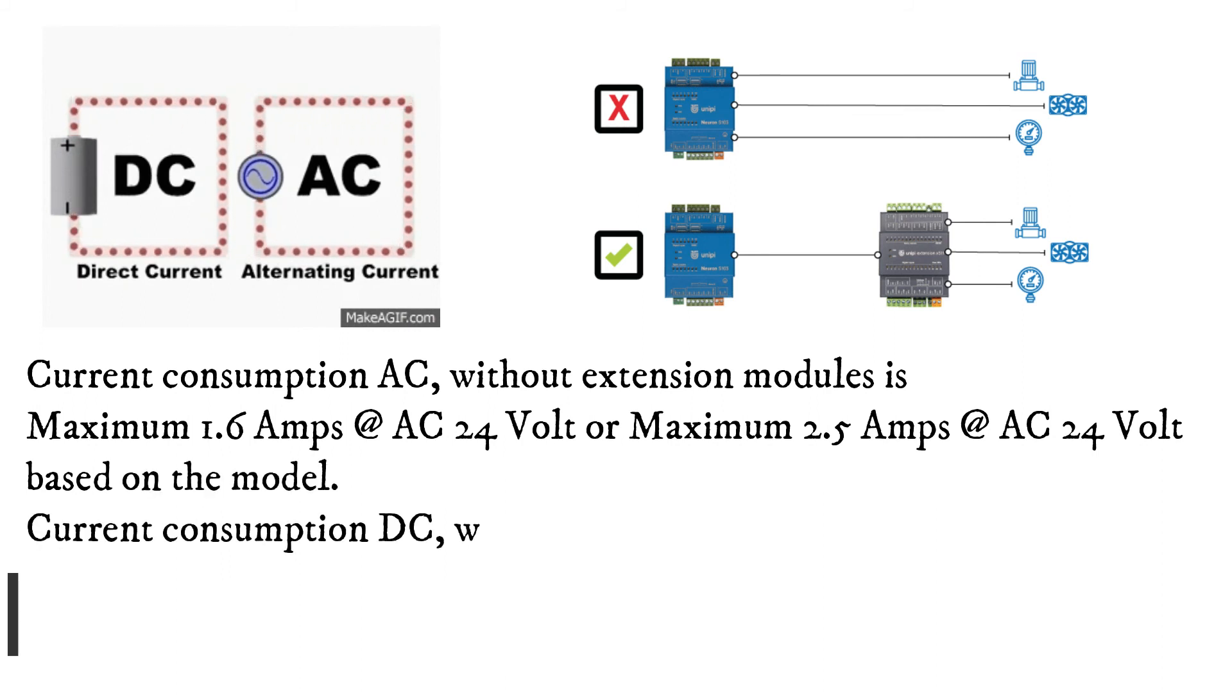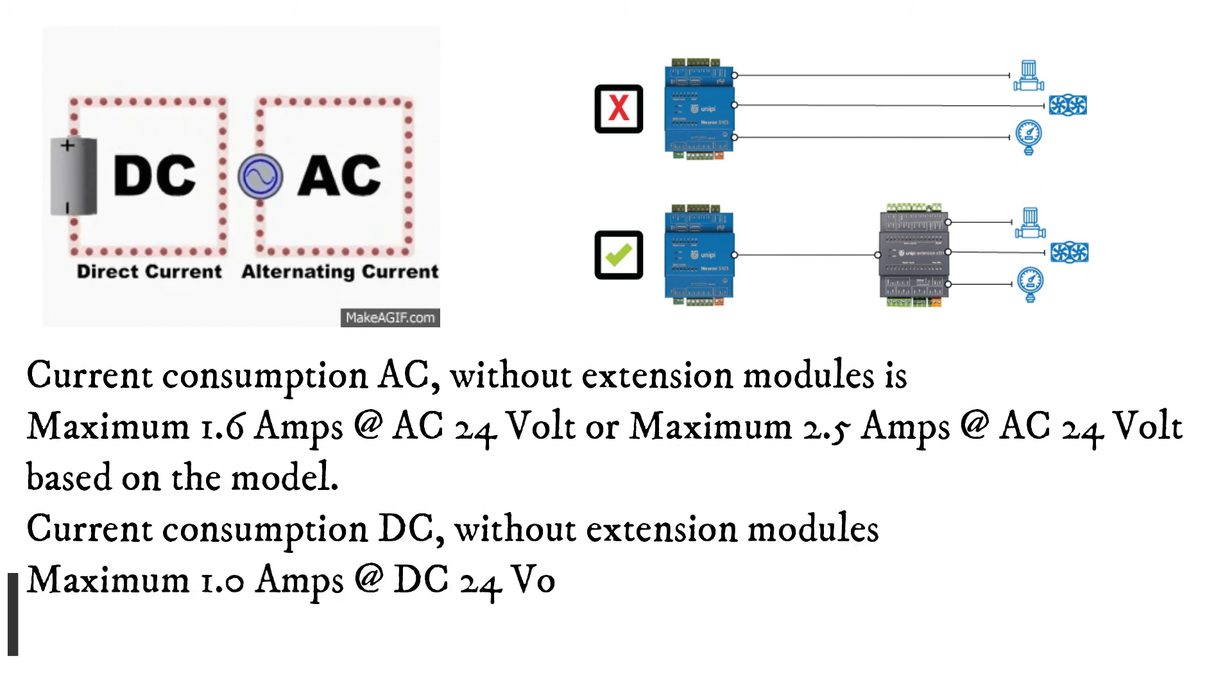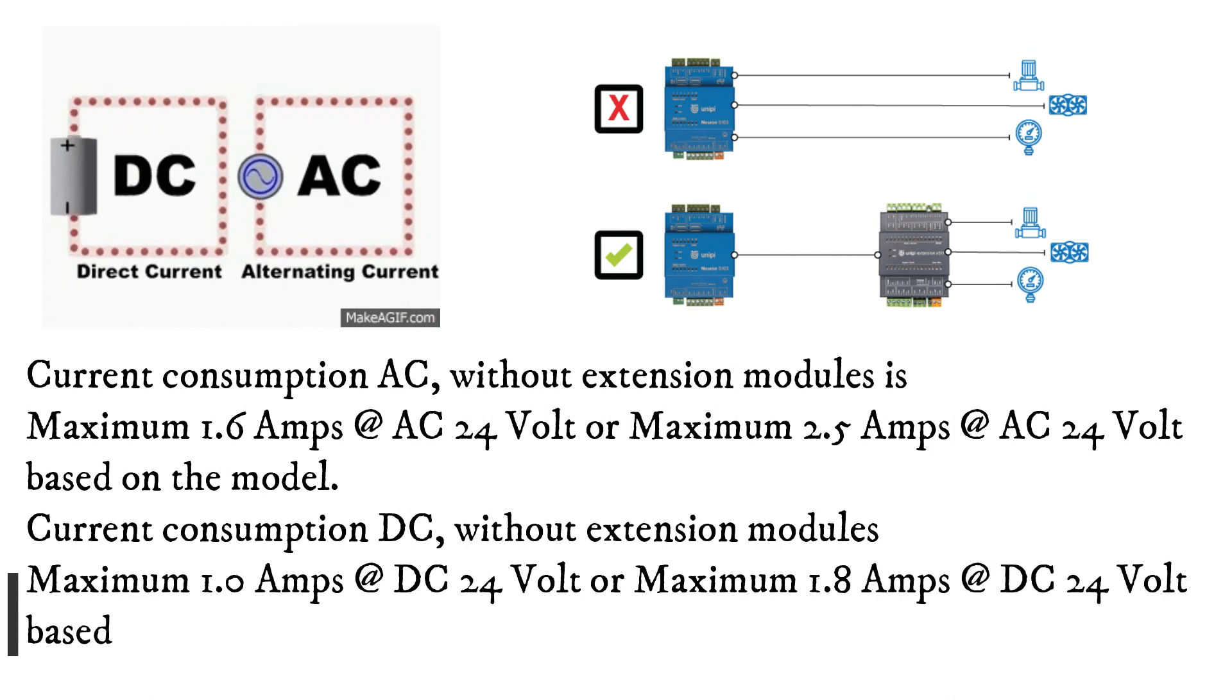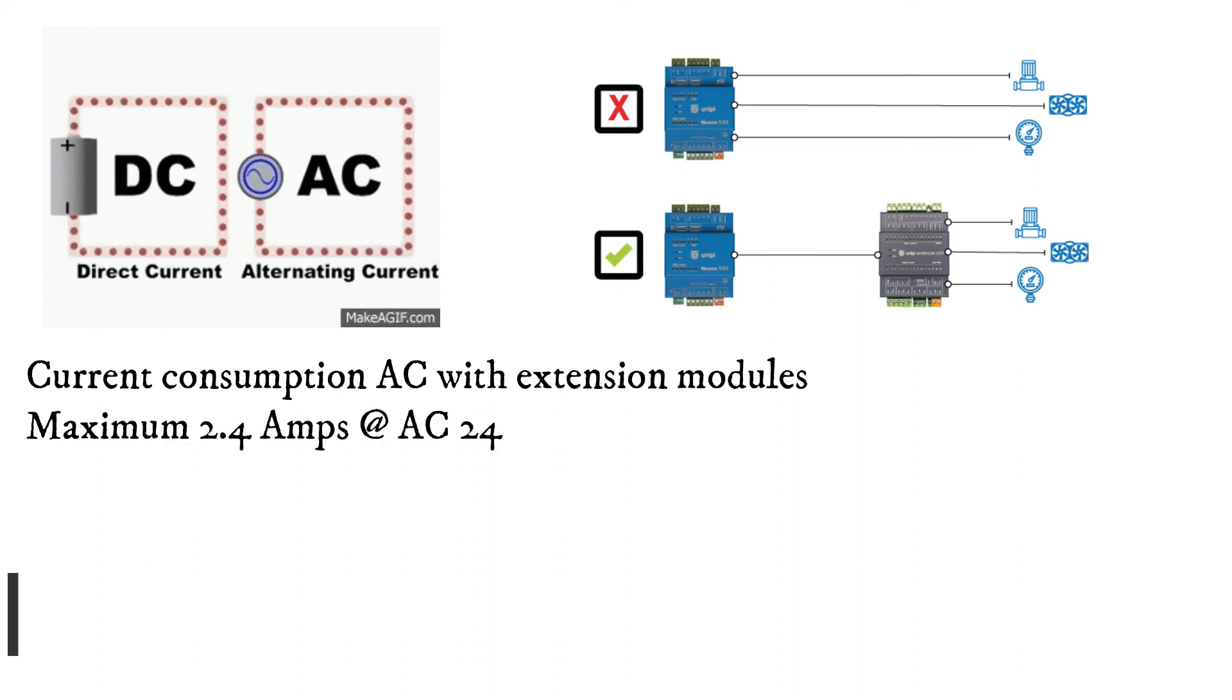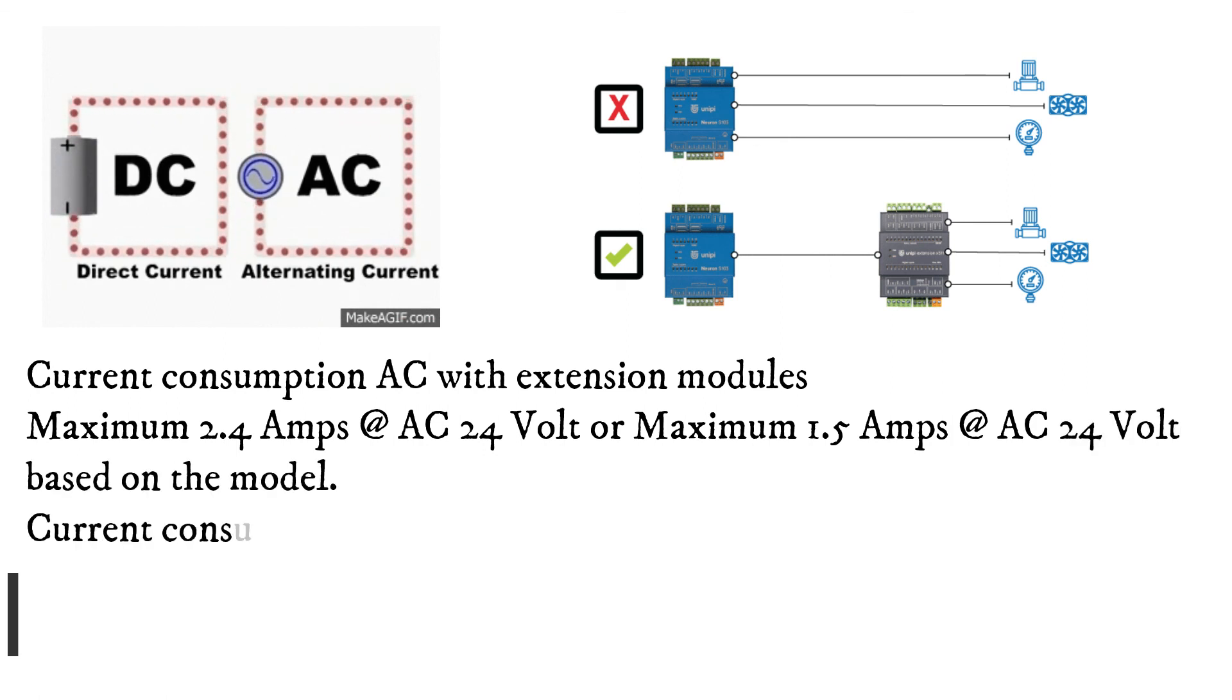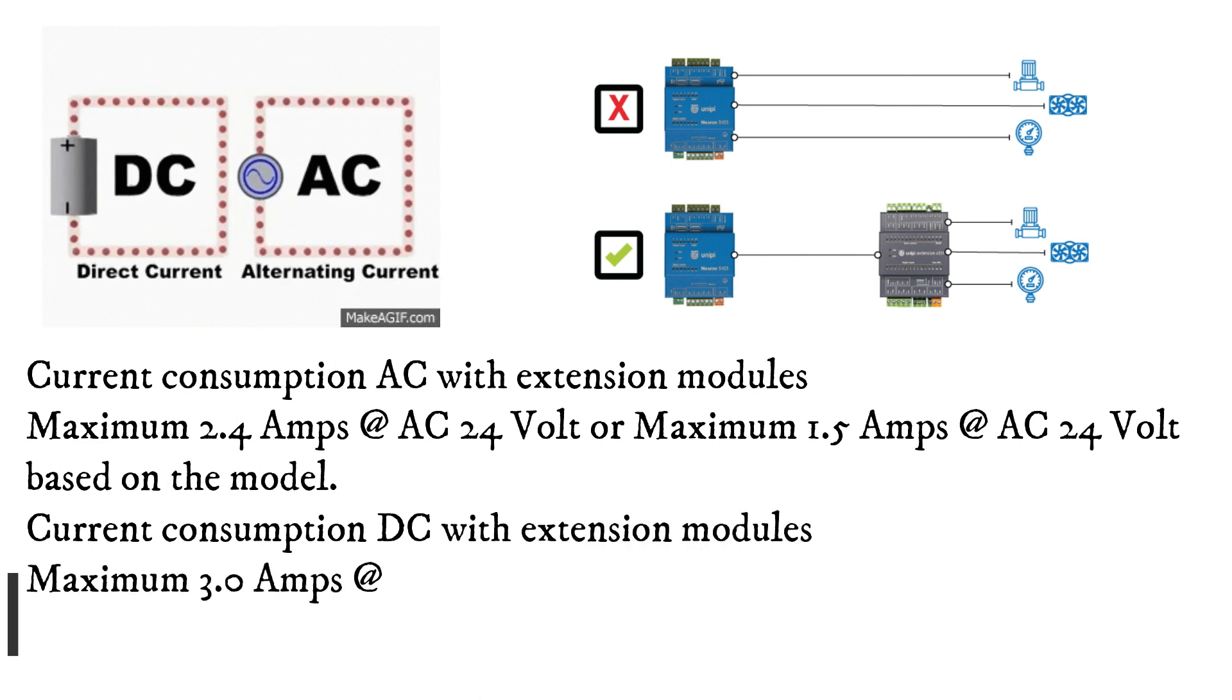Current consumption AC with extension modules: Maximum 2.4 amps at AC 24 volts or maximum 1.5 amps at AC 24 volts based on the model. Current consumption DC with extension modules: Maximum 3.0 amps at DC 24 volts or maximum 2.2 amps at DC 24 volts based on the model.